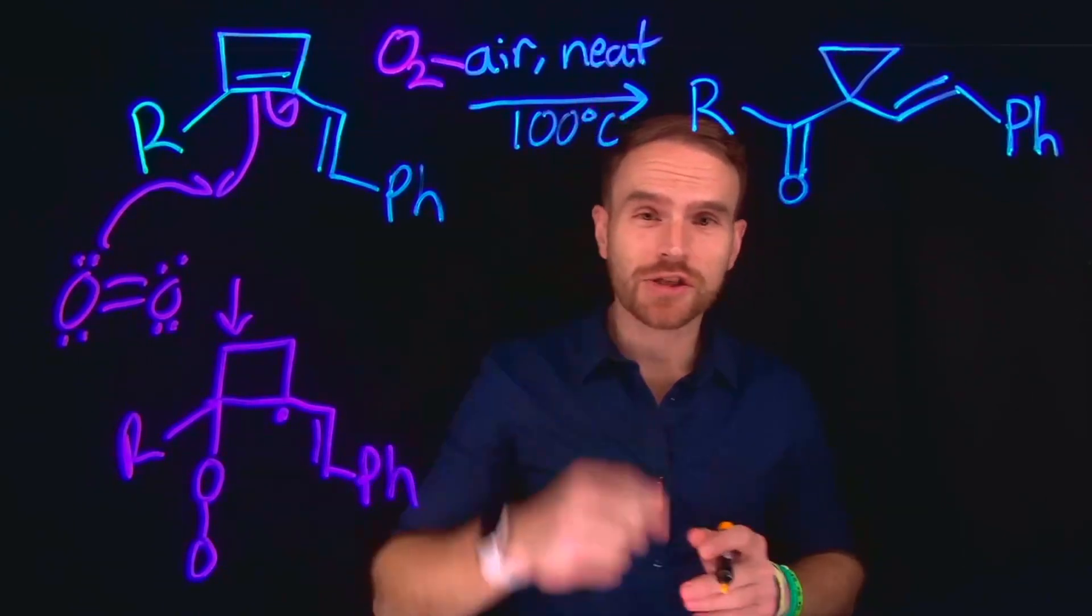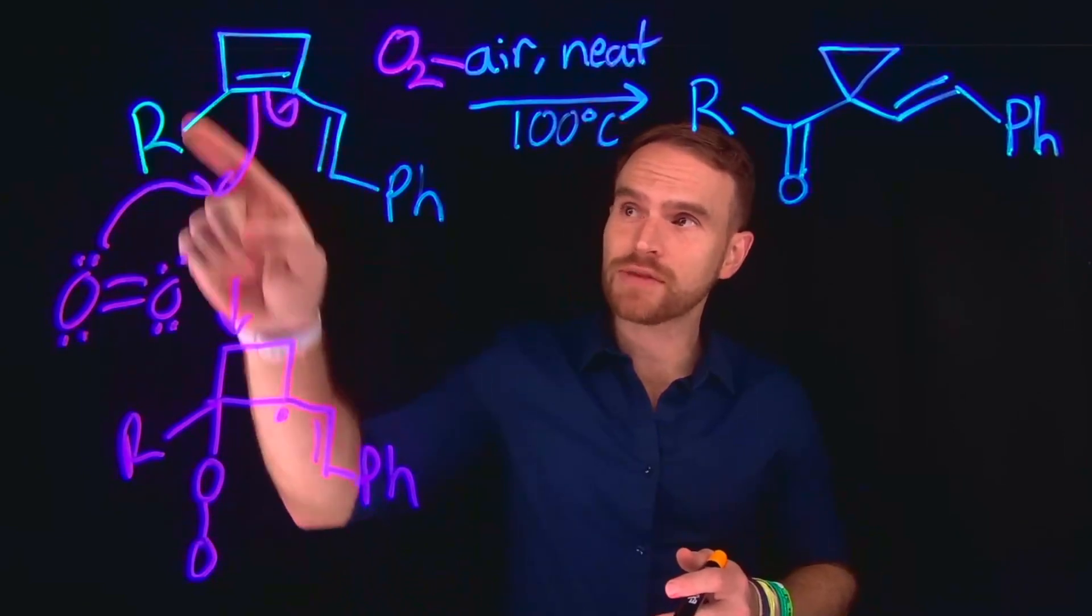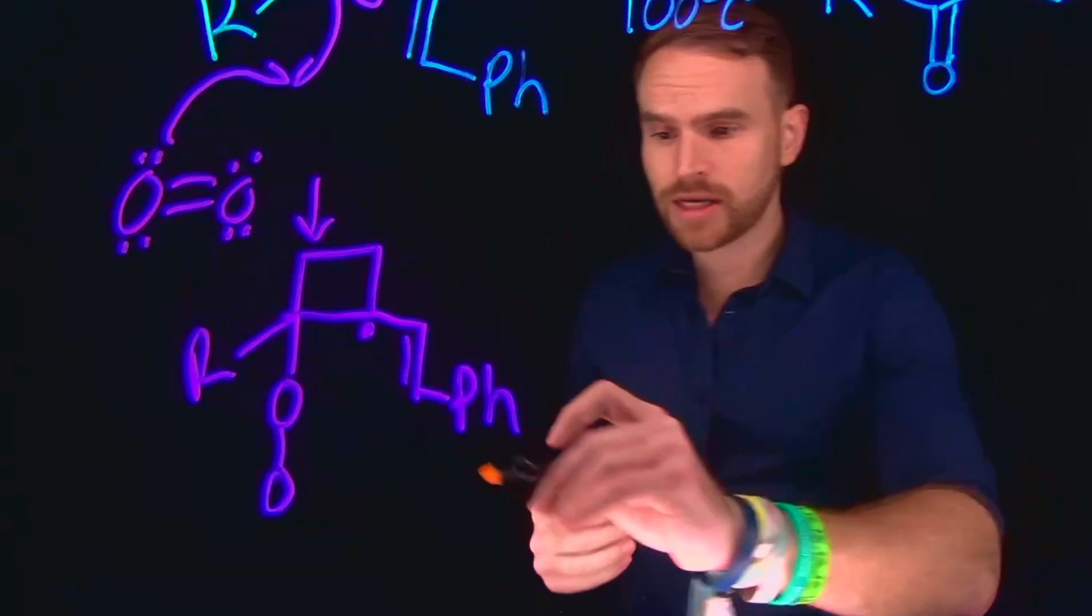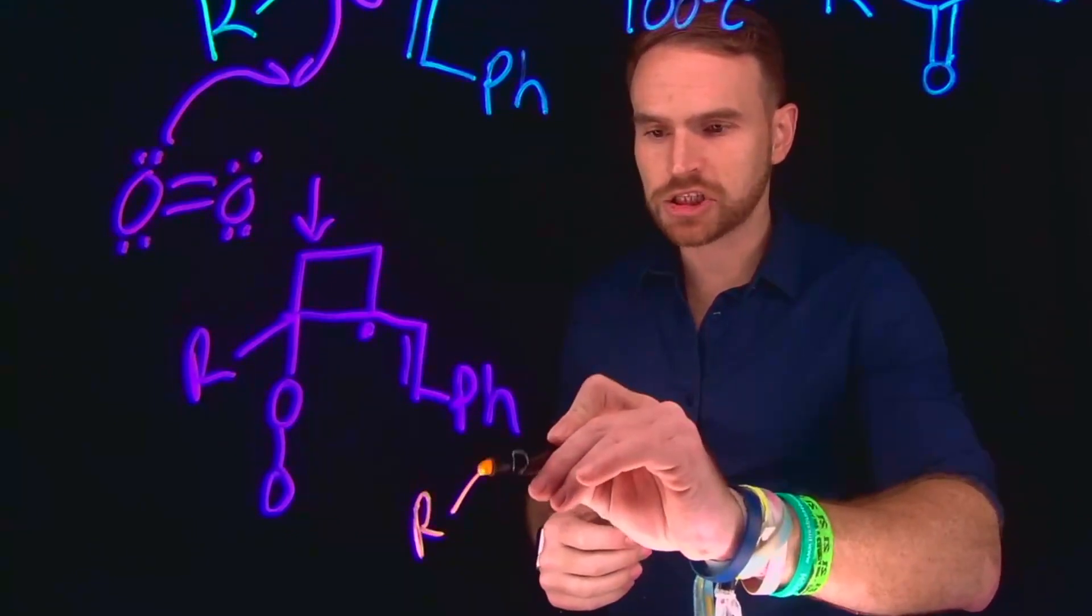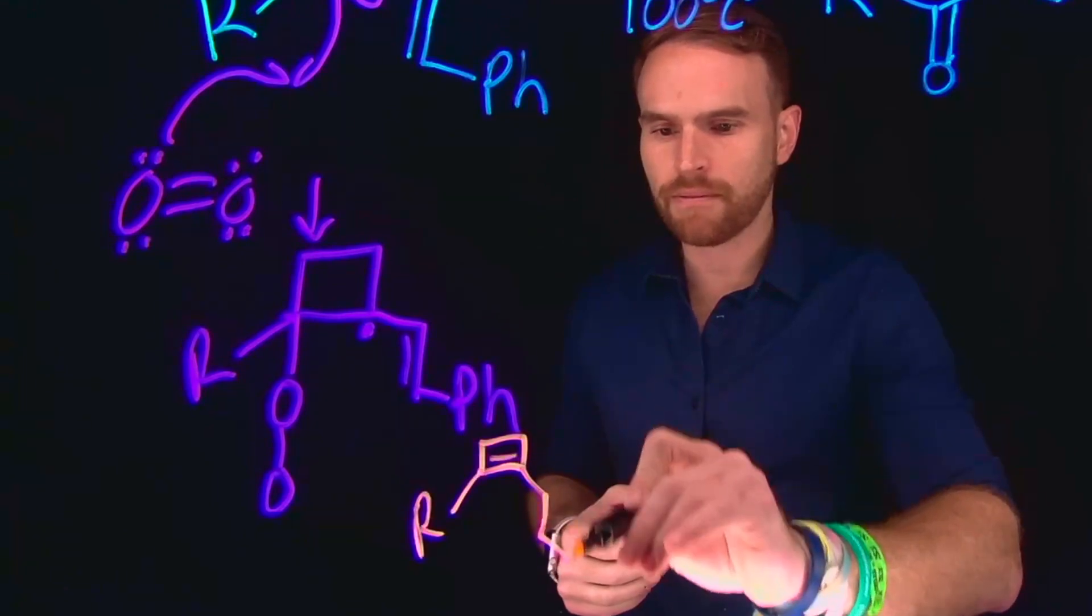Now importantly, in this reaction you were told that it was neat, meaning there's no other reactants. So what's going to happen is one of these original starting molecules is going to come and react with this species. So we can draw in another molecule and showcase how it's going to react to form finally our product after a few more steps.